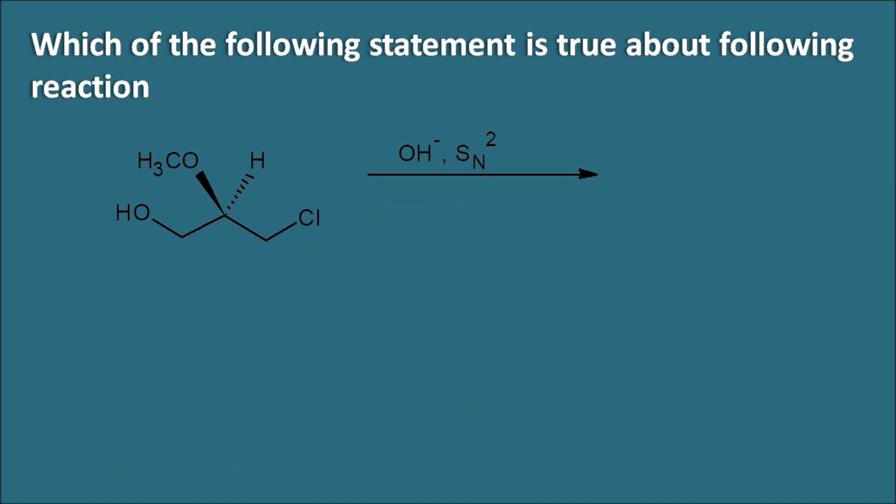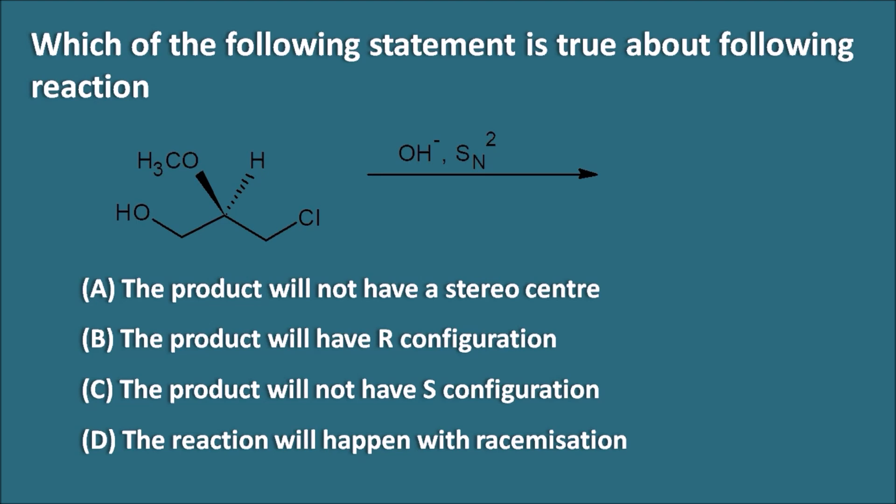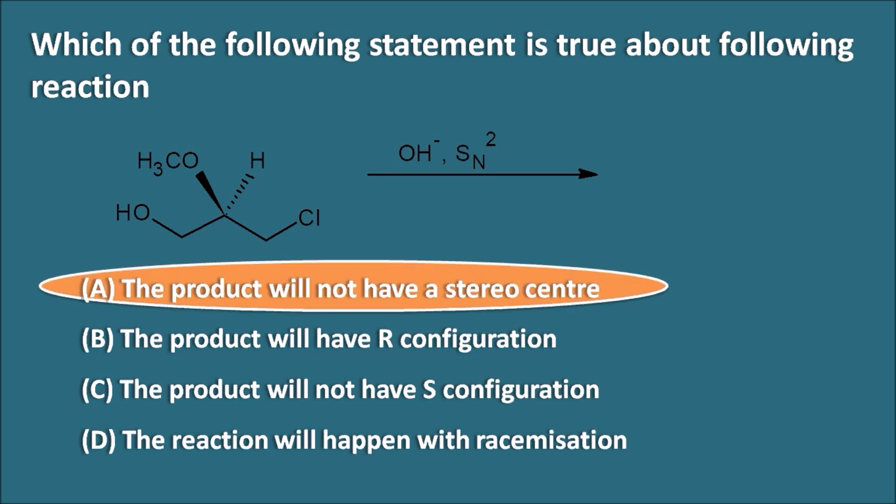The third question asks: which of the following statements is true about the given reaction? The options are: the product will not have a stereocenter; the product will have R configuration; the product will not have S configuration; the reaction will happen with racemization. The right answer is that the product will not have a stereocenter.